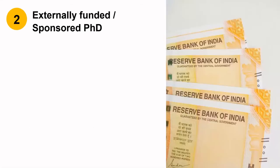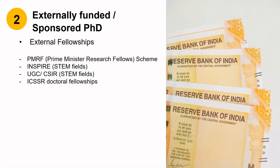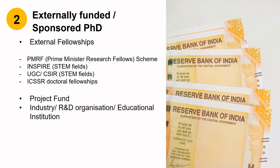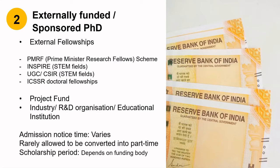Type 2: externally funded or sponsored PhD. Candidates with funding from various fellowships come under this category. There can be more fellowships than the examples listed here. Candidates with project funds, or any candidate from industry, an organization, or an educational institute that is providing paid leave to do a PhD also comes under this category. Admission notice time for all these categories varies, and it is rarely allowed to be converted into part-time except in a few exceptional cases. Scholarship period depends upon the funding body.